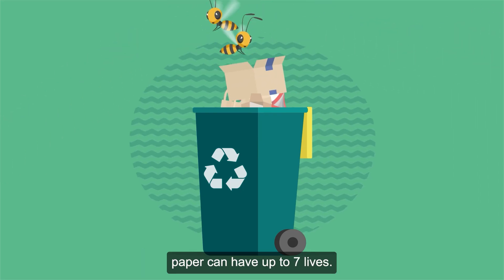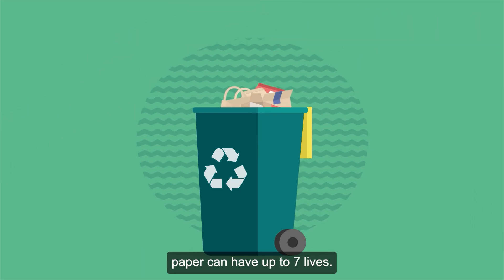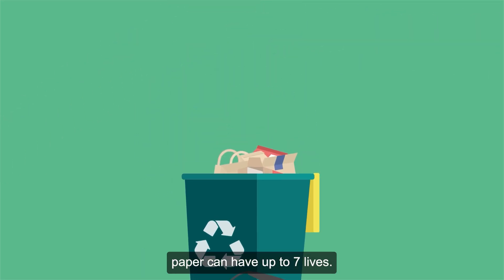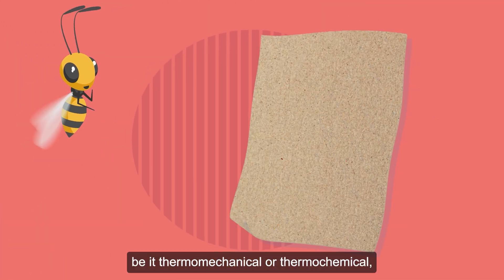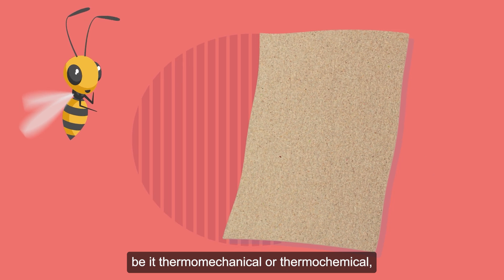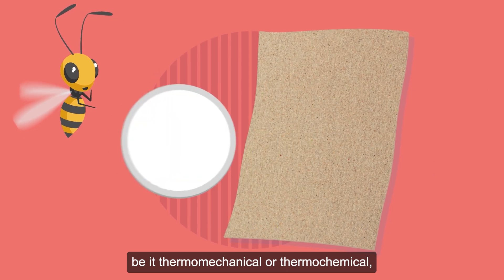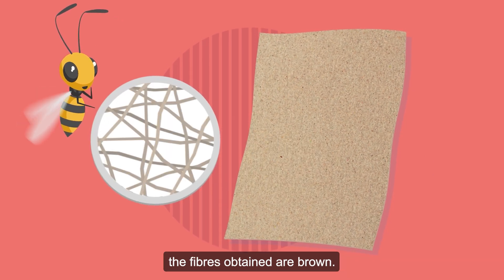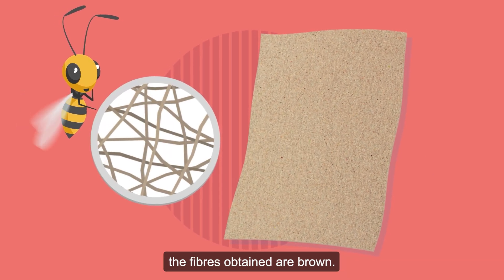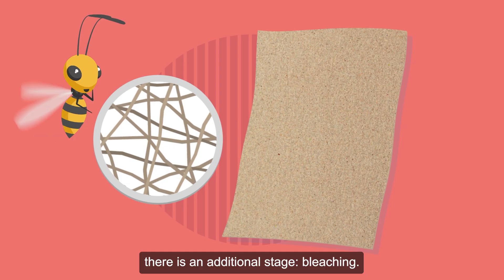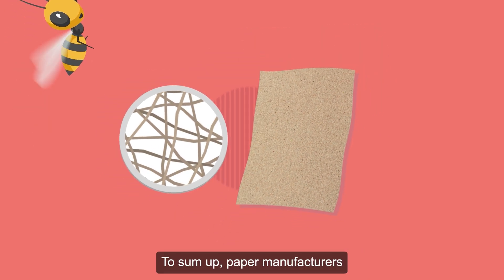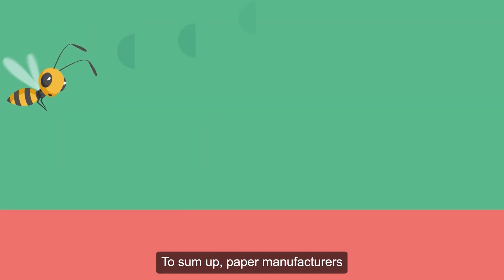Paper can have up to seven lives. Regardless of the method, be it thermo-mechanical or thermochemical, the fibers obtained are brown. In some cases there is an additional stage: bleaching.